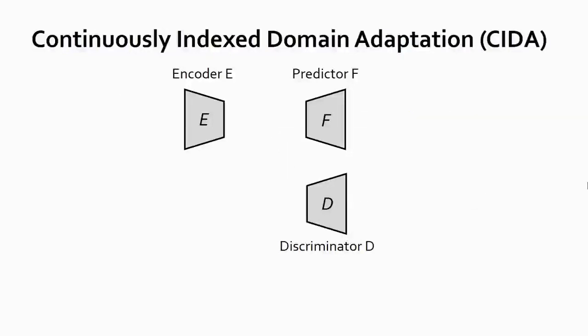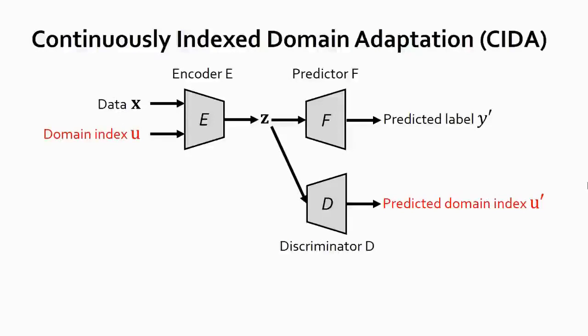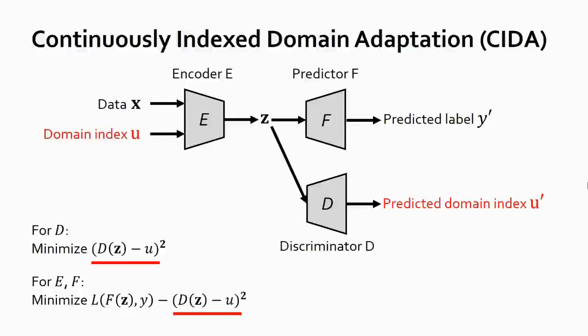Different from categorical domain adaptation, in our proposed continuously indexed adaptation, or CIDA in short, the encoder takes not only the data X, but also its domain index U, and maps them into an embedding Z. The predictor remains the same. For the discriminator, instead of performing classification, it tries to regress the domain index using the given embedding. Training losses are quite simple. Our discriminator uses the L2 loss between the predicted and ground truth domain index. On the other hand, the encoder and predictor try to fool the discriminator while predicting the labels accurately. Note that this L2 loss is crucial to make the model aware of the distance between domain indexes.